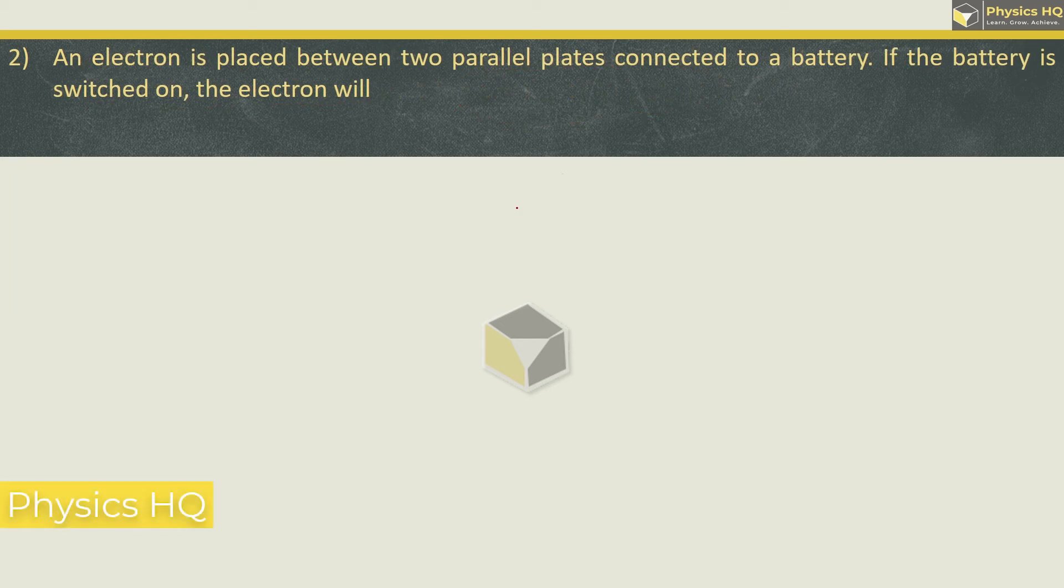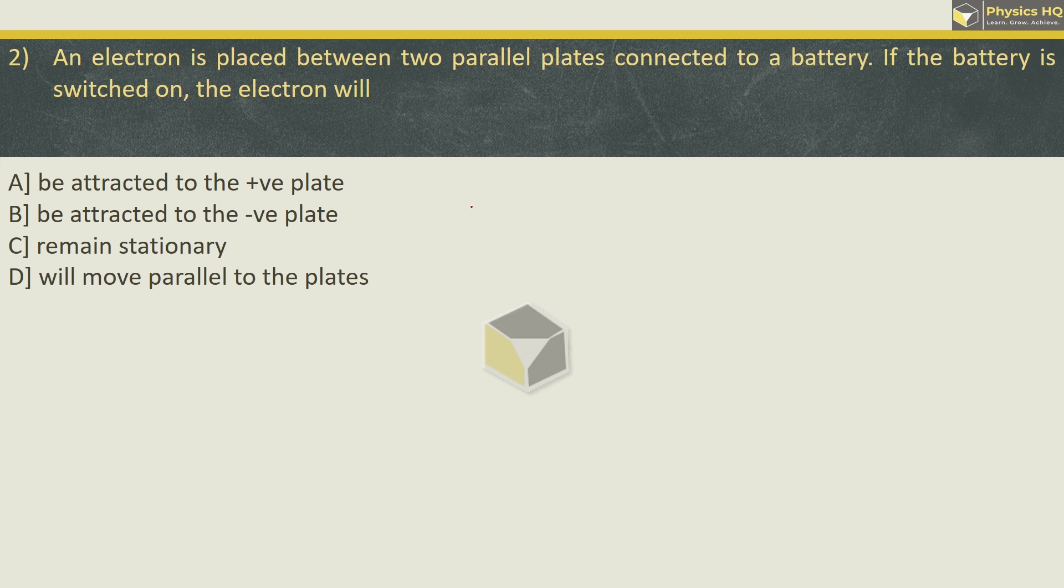An electron is placed between two parallel plates connected to a battery. If the battery is switched on, the electron will definitely be attracted towards the positive plate. Because the electron has a negative charge and the negative charge is attracted to positive potential. Next MCQ.